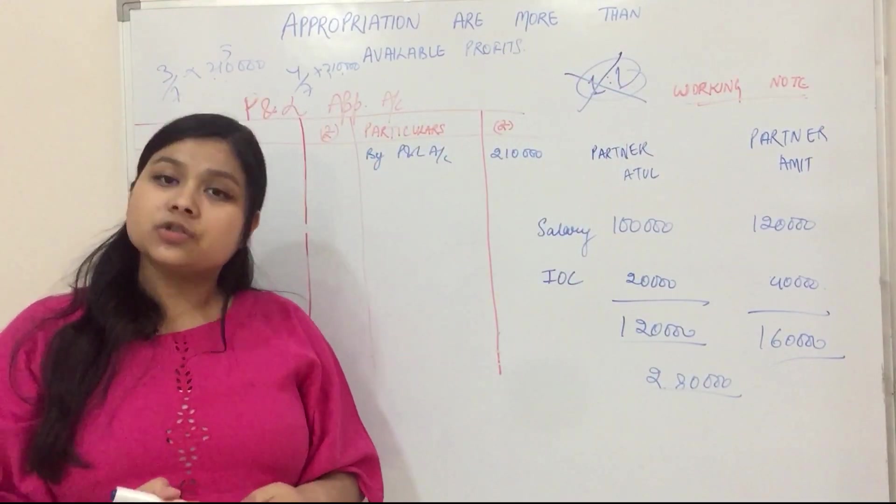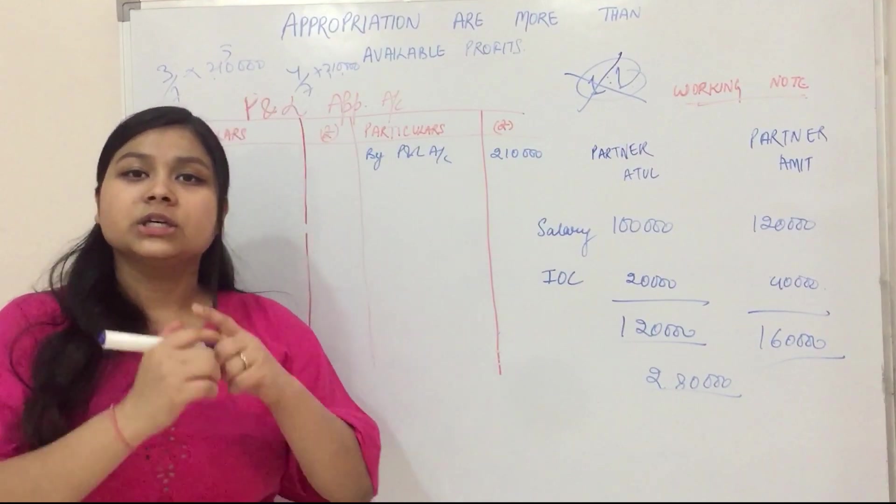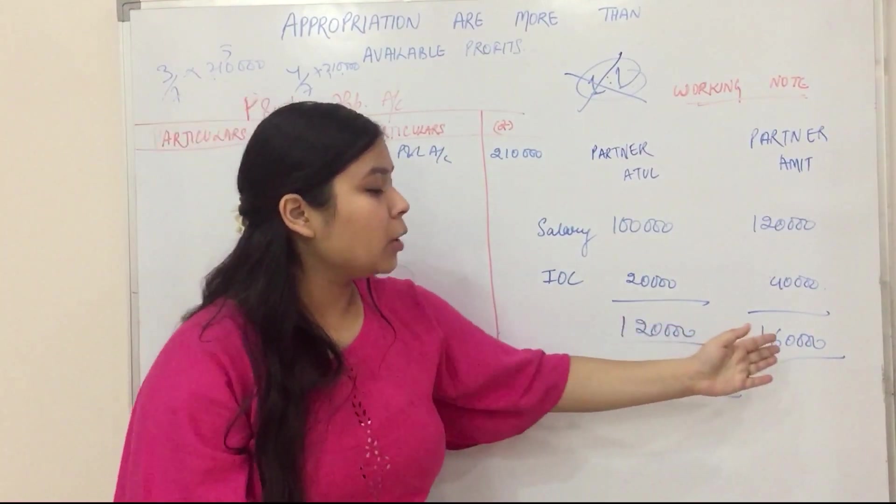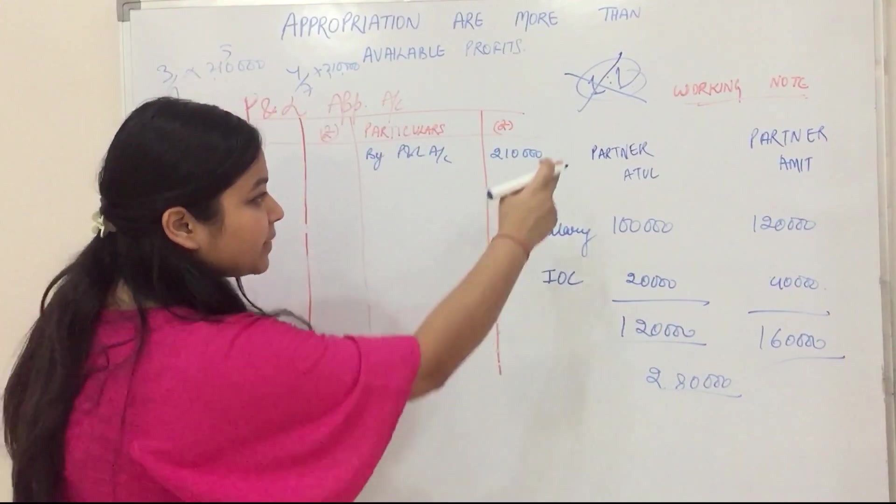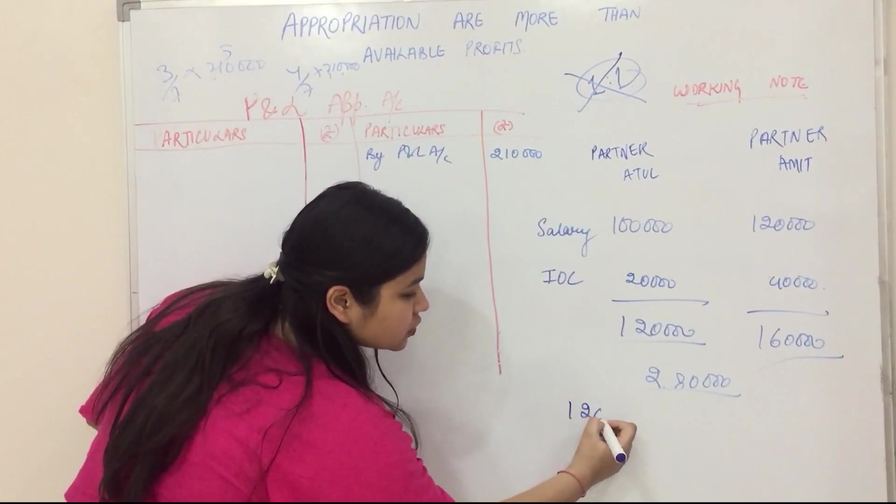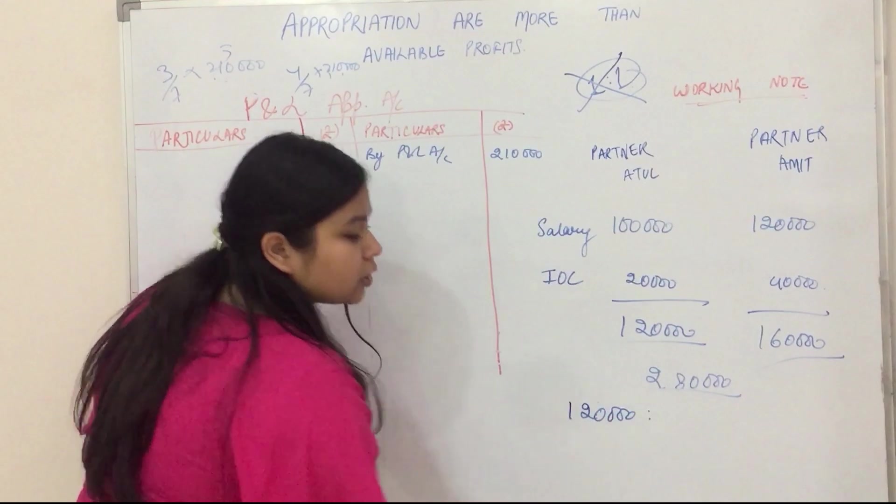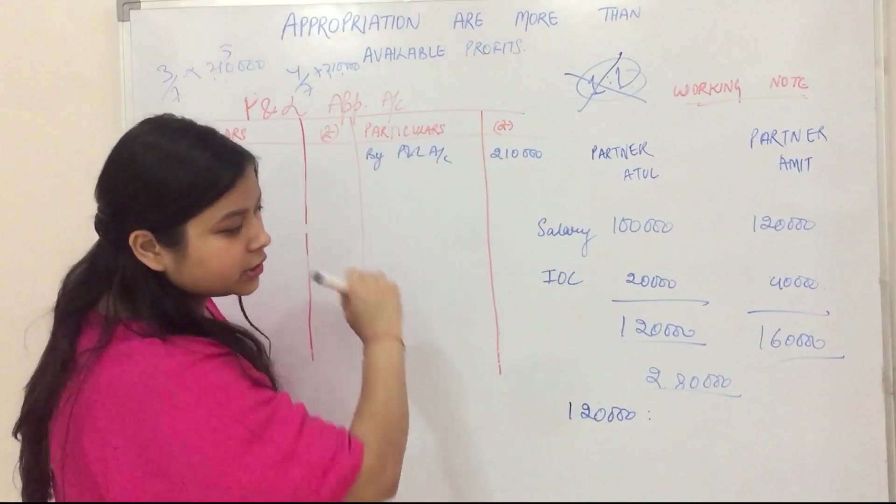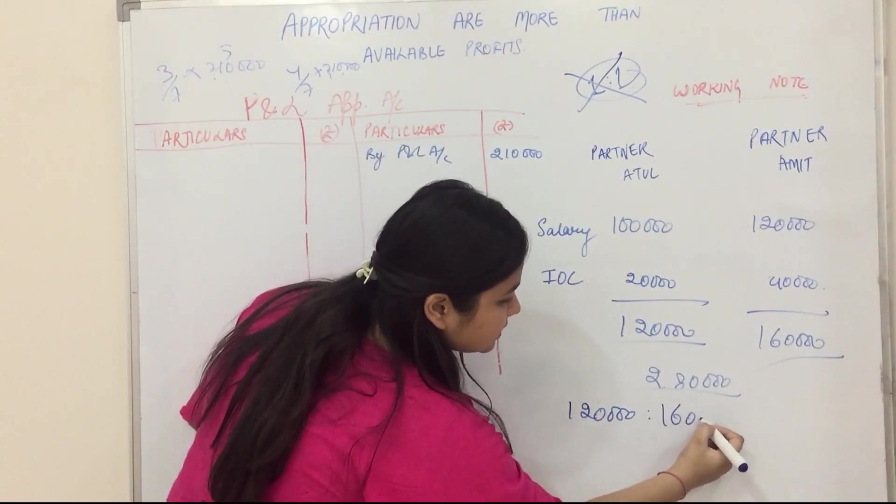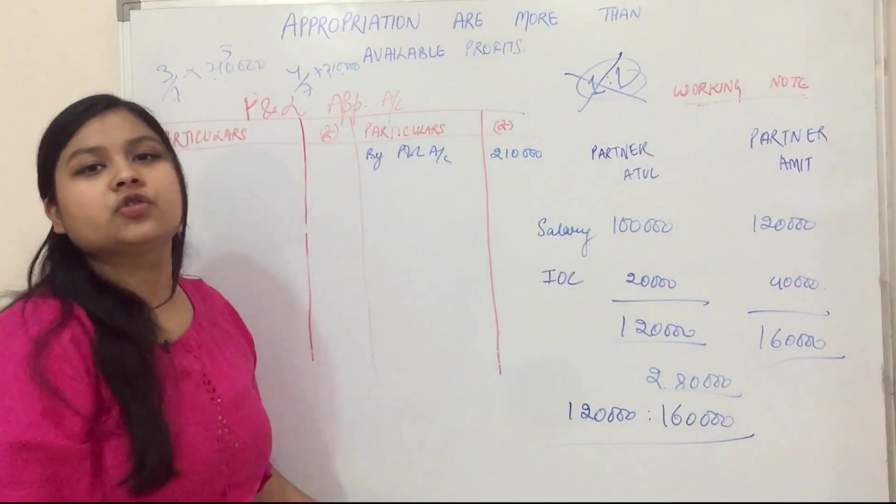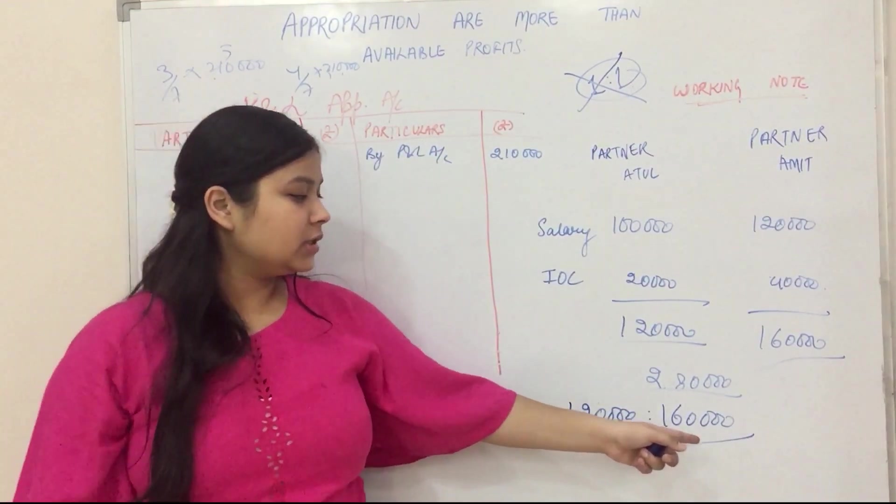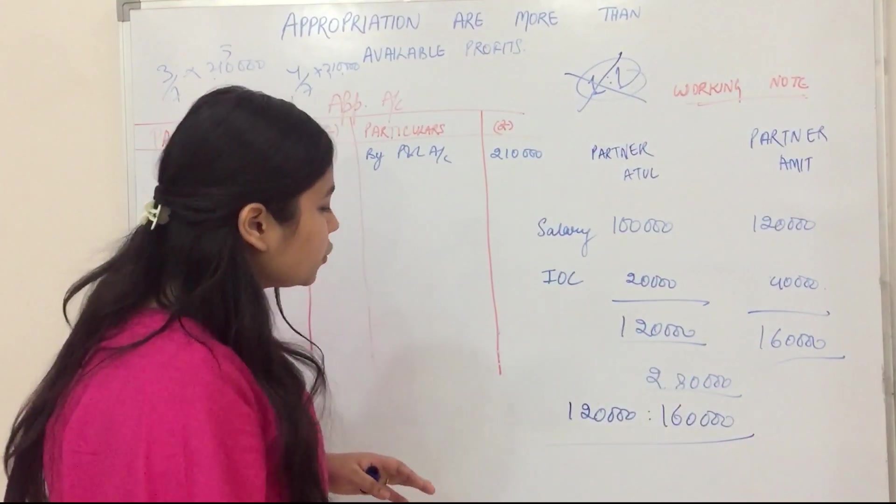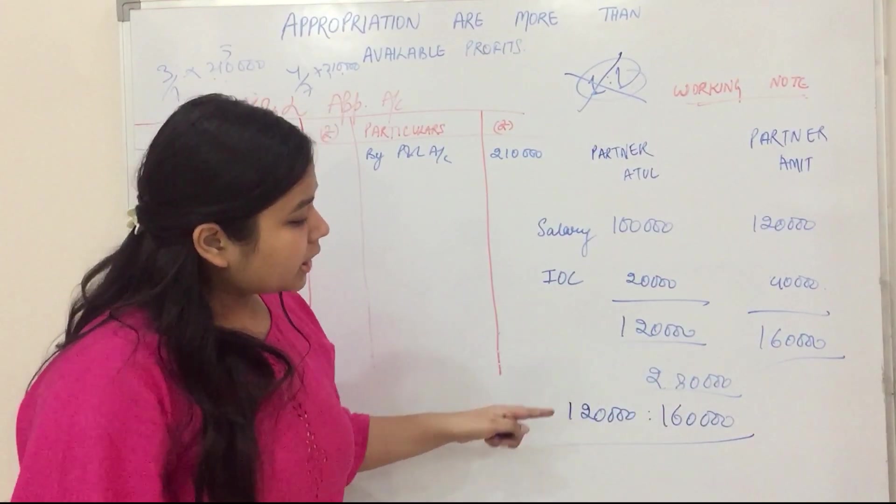So what ratio will we give? We will distribute in that ratio, in which amount we have to give. How much amount we have to give Atul? 1,20,000. And how much to Amit? 1,60,000. So in this ratio we will transfer. What ratio will be 1,20,000 to 1,60,000? This will be 3 to 4.